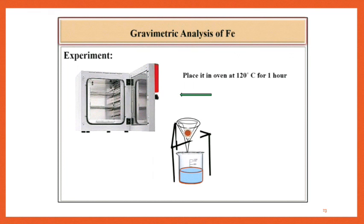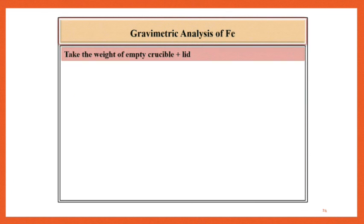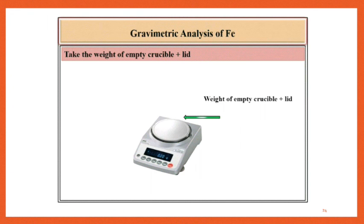Allow the water to drain out completely and dry the precipitate on a metallic cone or in an oven at 120 degree centigrade for 1 hour. Meanwhile, take the weight of empty crucible plus lid and record this reading as W1 gram.